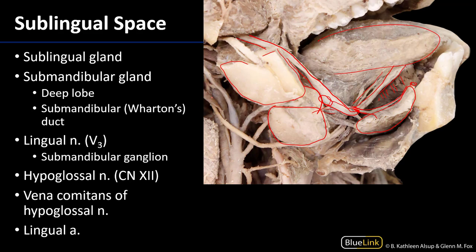Descending laterally and cutting across is the hypoglossal nerve, going lateral to the external carotid artery. The hypoglossal nerve is an important efferent supply to the tongue muscles, and it has an accompanying vein — the vena comitans of the hypoglossal nerve, though the remainder of that vein has been removed here. We can also identify where the lingual artery originates from the external carotid artery.